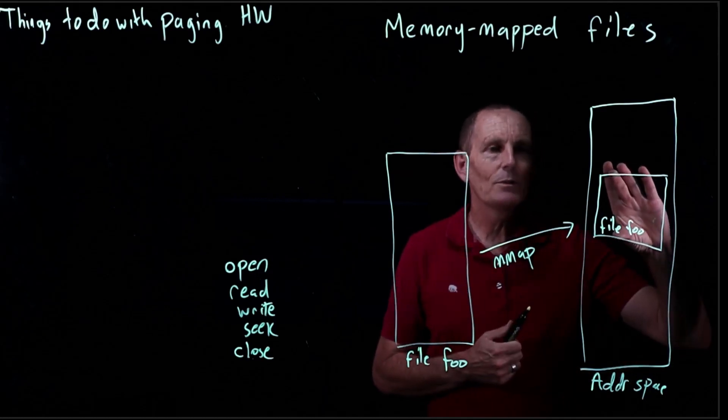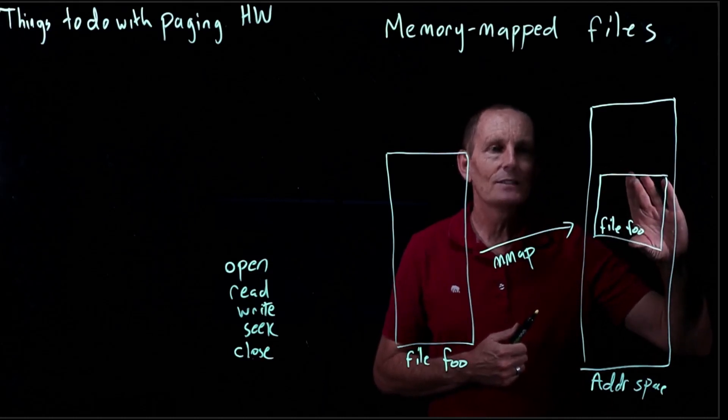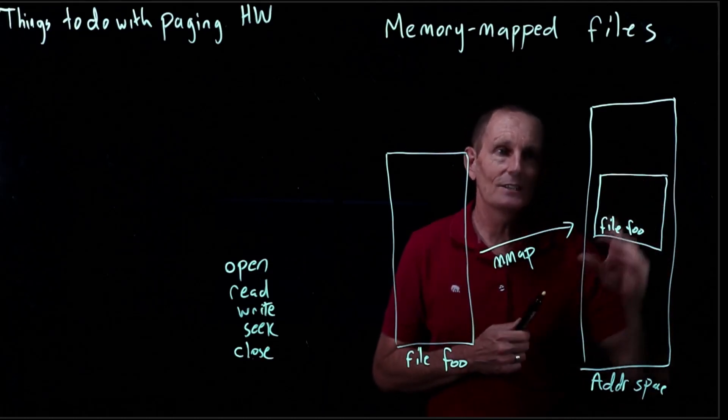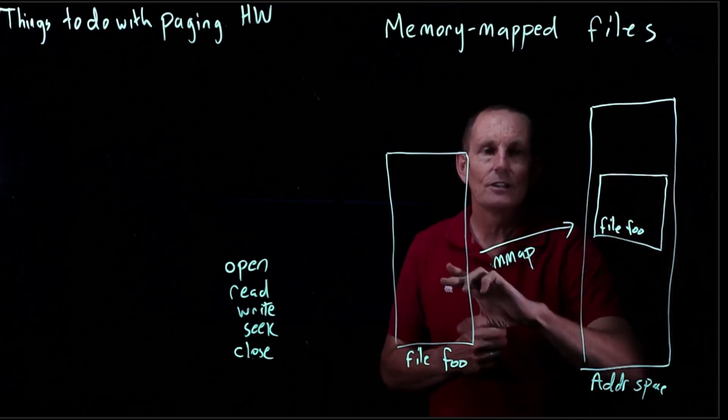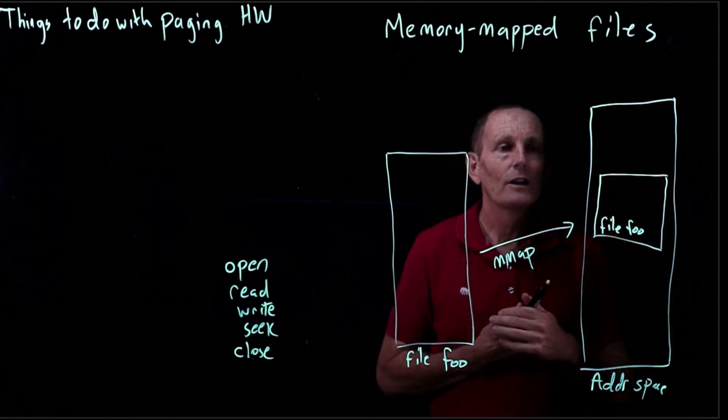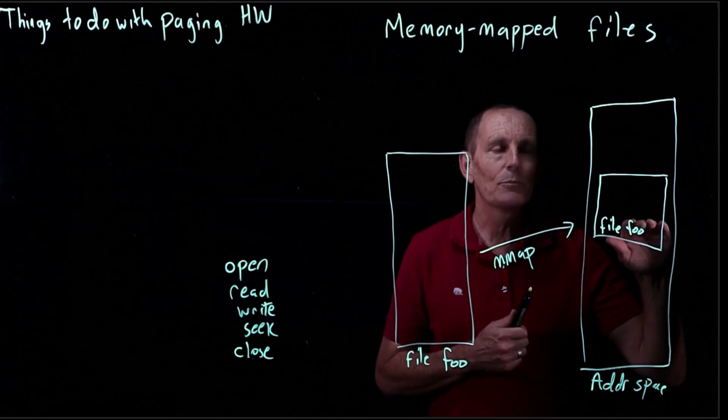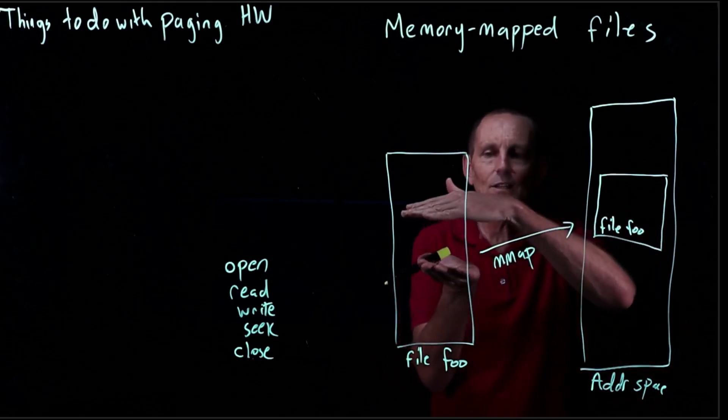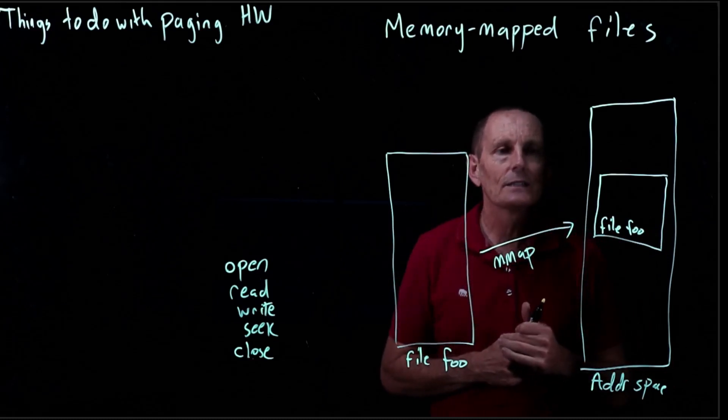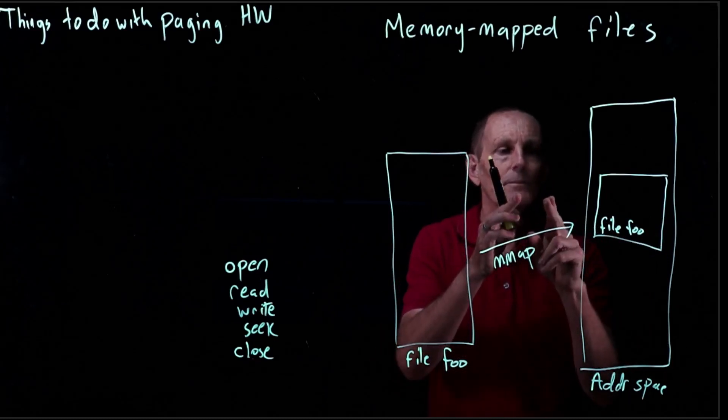So it creates page table entries, marks them as not present, but keeps meta information that says this address space is a reference to this file. And so therefore, if you try and read and write and something's not present, it can go ahead and page in that particular page from the disk from the file, put it in memory.